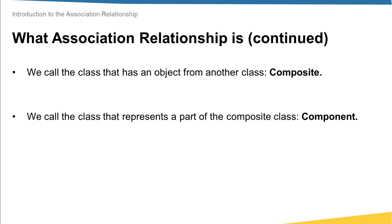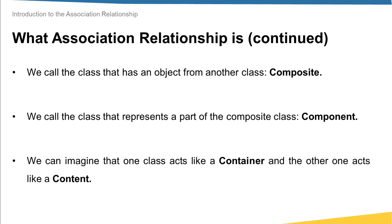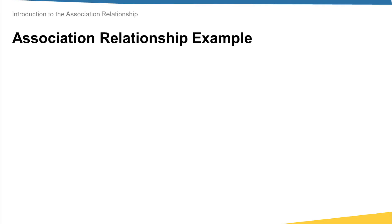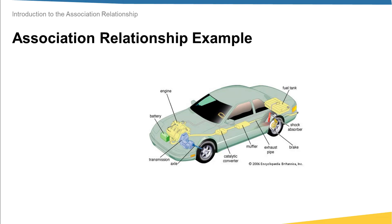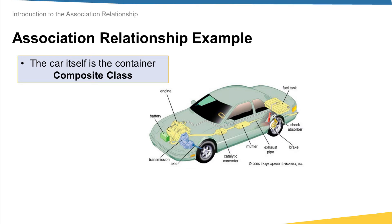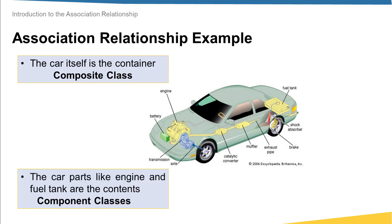From this we can imagine that one class acts like a container whereas the other class acts like content. For example, the car class is the container or composite class because it has objects from other classes. We know that a car has an engine, fuel tanks, and other contents, and all of these classes we call component classes.